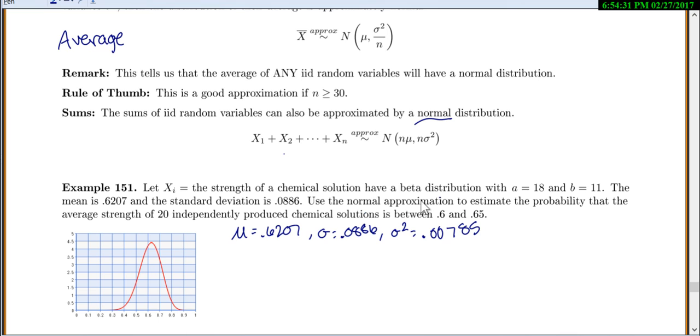So 0.00785. Now let's use our normal approximation to estimate the probability that the average of 20 of these solutions is between 0.6 and 0.65. 20 is not as high as 30, but here's what it looks like with the beta. It's not exactly symmetric, but it's pretty close to the normal distribution. For n equals 20, this will be fine. It's not unnormal enough that it's going to be a big deal. This was our beta, and it's not quite normal, but it's really pretty close to start with.